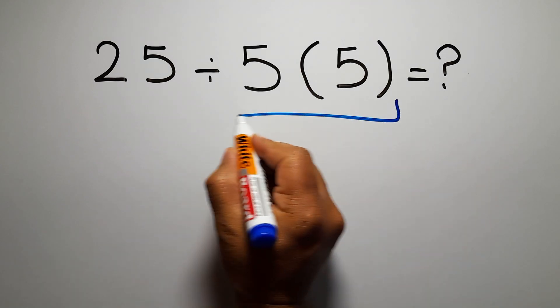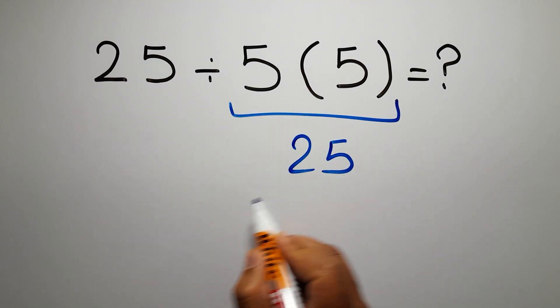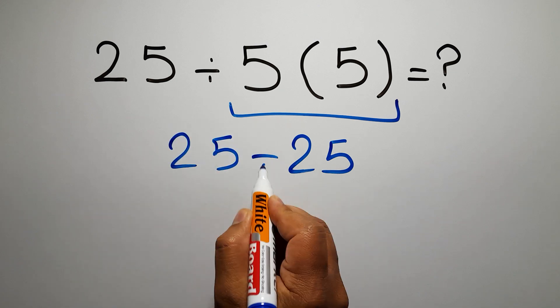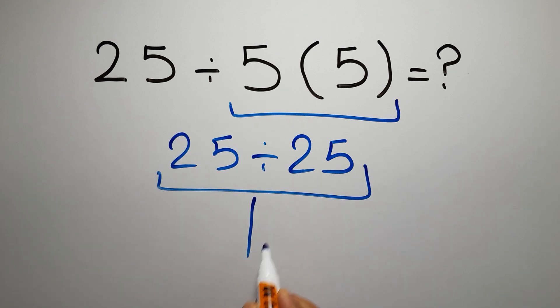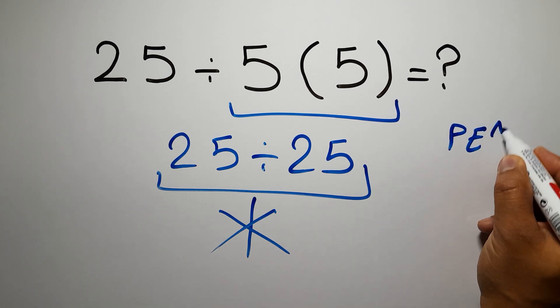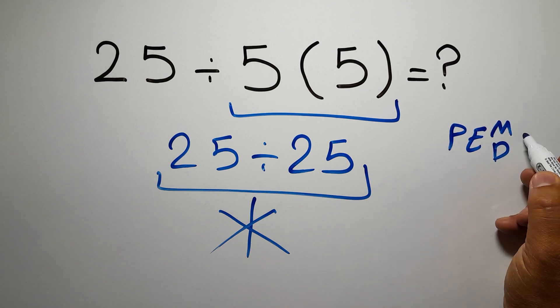5 times 5 gives us 25, so 25 divided by 25 is just 1. But this answer is not correct, because according to the order of operations, first we have to do parentheses, then exponents, then multiplication or division, and